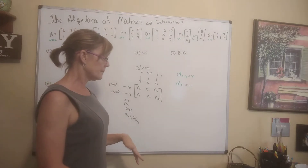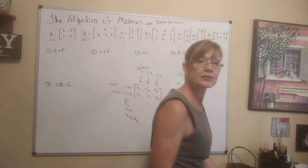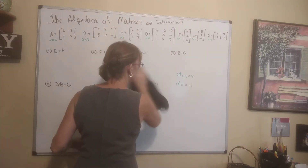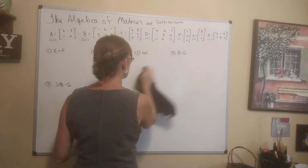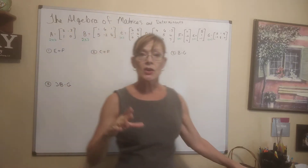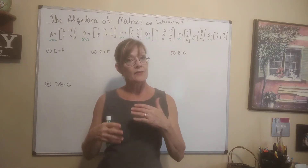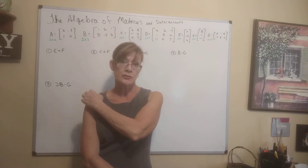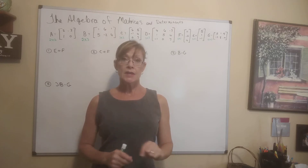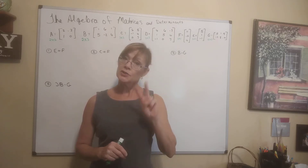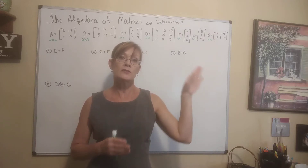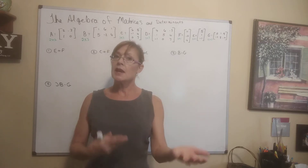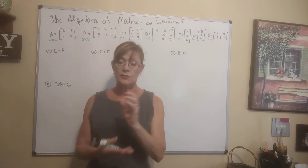Matrices represent vectors in space, and they have dimensions. A scalar is a number that has just a magnitude — no direction associated with it. If you've taken trigonometry, you know a vector has both magnitude and direction, but a scalar is just an amount.